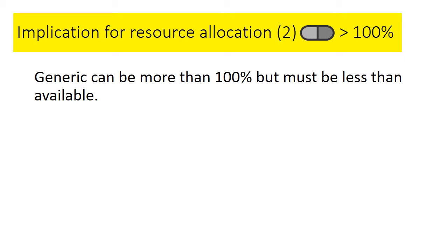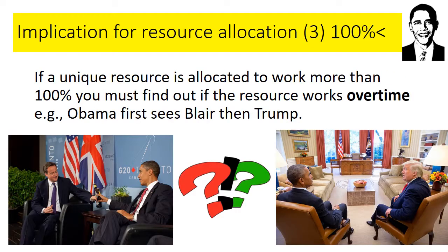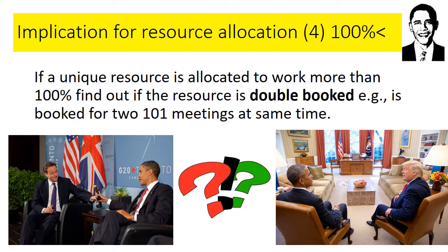For resource management: a generic resource can be more than 100% — more than one — but it must be less than the amount available, otherwise it's over-allocation. If you have only five cars, you put it as 500% and no more. For unique resources, if a unique resource is above 100%, it means that person must work overtime, because an individual like Obama can't be in London and Washington at the same time. Things may simply be double-booked by mistake.